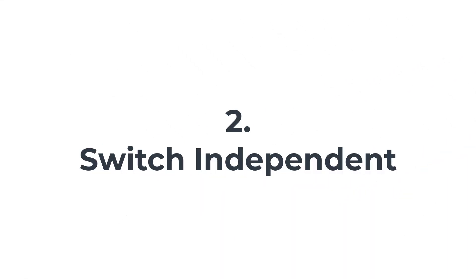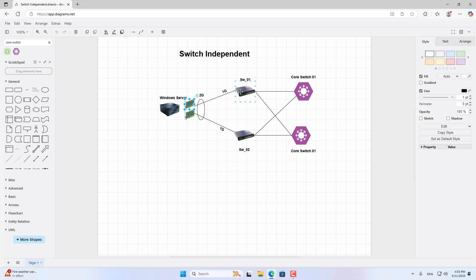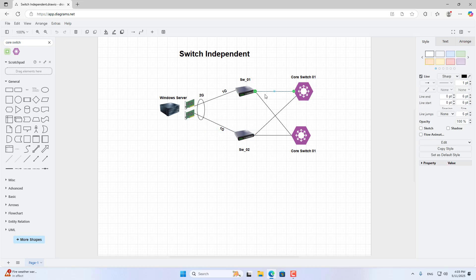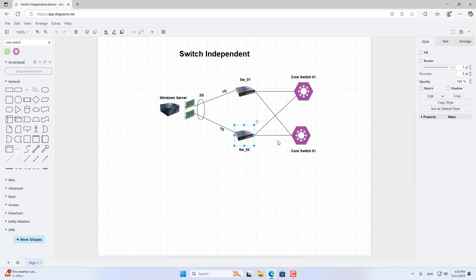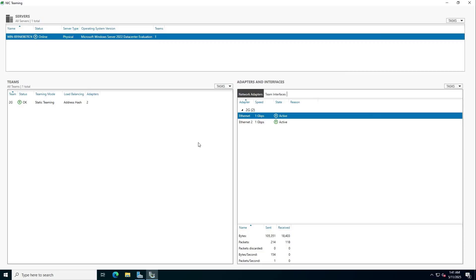Switch Independent. This is the connection model. The server connects to two different switches. Each interface of the server connects to different switches. This is a secure solution, often used in a large system. It is expensive. This is how to configure.